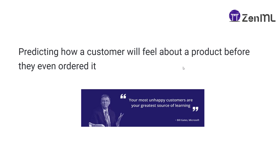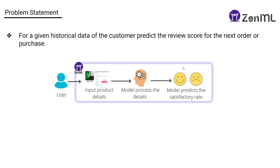ZenML is an MLOps tool which we're going to use to build a full end-to-end machine learning project. The problem statement is: for a given historical data of the customer, you need to predict the review score for the next order or purchase. You're given input product details, the model processes those details, and you get a satisfaction score between 1 and 5. This is a regression problem — not a classification problem — and your output range is constrained between 1 and 5.